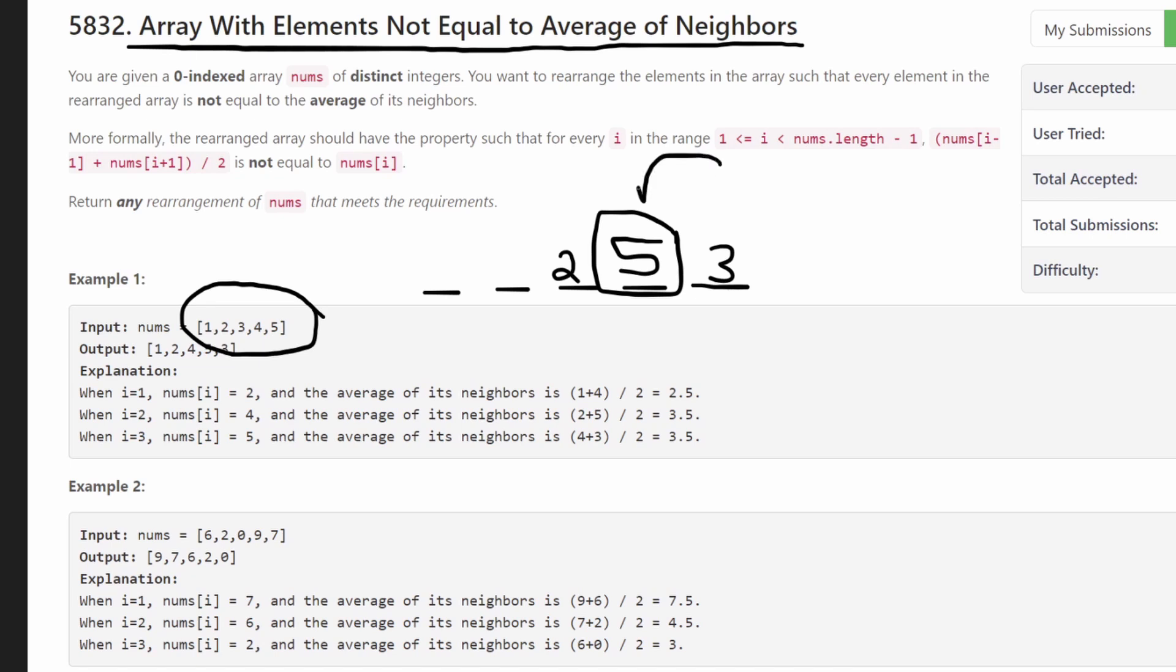That for every single value, both of its neighbors are either going to be less than it or are going to be greater than it. And yes, we can guarantee this.